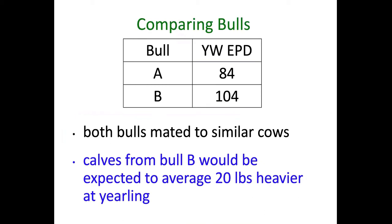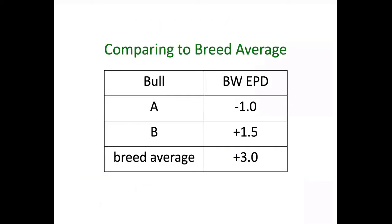Let's say we have two bulls: Bull A with a yearling weight EPD of 84 and Bull B with a yearling weight EPD of 104 — a 20-pound difference. If we bred both of those bulls to similar type cows, on average we would expect the calves from Bull B to be 20 pounds heavier at yearling. It doesn't tell us a certain weight, it just says if we breed them to similar cows and manage them the same, on average Bull B's calves would be 20 pounds heavier.